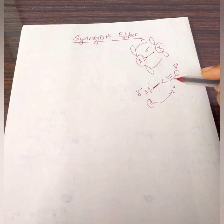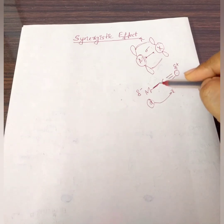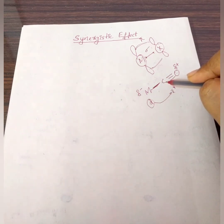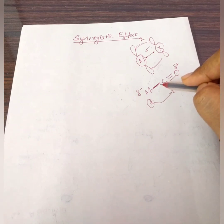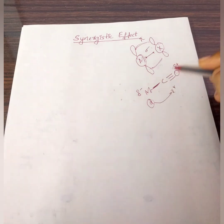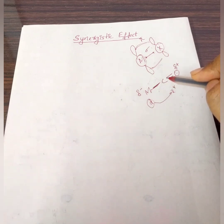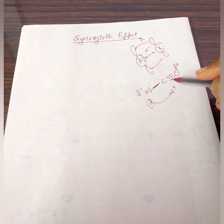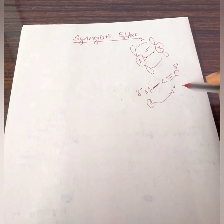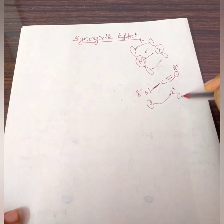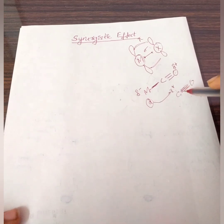Due to the synergistic effect, the bond between the metal and carbon becomes much stronger, so the bond length is reduced and the bond order tends to increase. Since the pi back-bonding results in the occupation of the pi-star orbital, the bond order of C-O decreases — meaning the CO bond becomes weaker and more elongated, making it much easier to break.